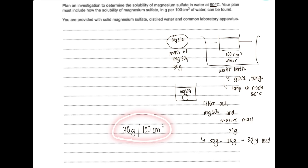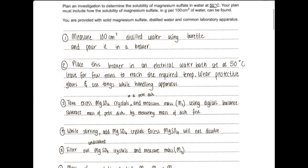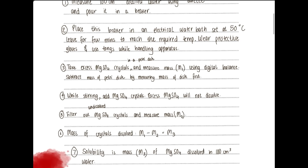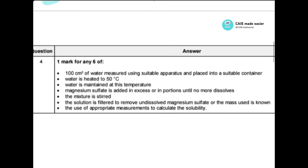To summarize the steps: measure 100 cm³ of distilled water using a burette and pour into a beaker. Place in an electrical water bath set at 50°C; leave for a couple of minutes. Wear protective gloves and use tongs for safety. Take excess magnesium sulfate crystals in a petri dish and record mass m1 using a digital balance, subtracting the mass of the petri dish. While stirring, add the crystals — excess will not dissolve. Filter out undissolved crystals and measure mass m2. The mass dissolved is m3 = m1 − m2, which equals the solubility in grams per 100 cm³.